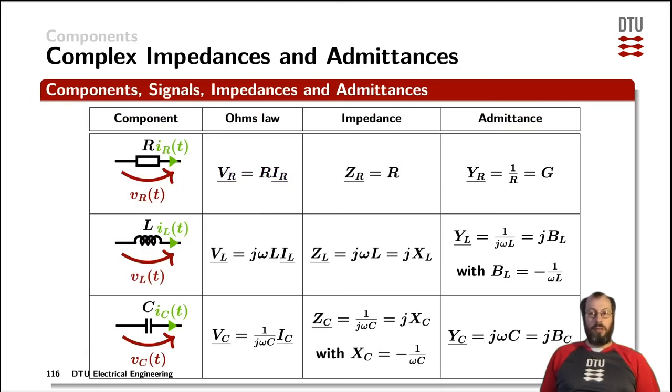Summing up all the components we have looked at so far: the resistor, the inductor, and the capacitor. With the signals, so the currents through them and the voltages across them being time dependent, we can use the phasor representation of Ohm's law, as indicated in this column of the table.